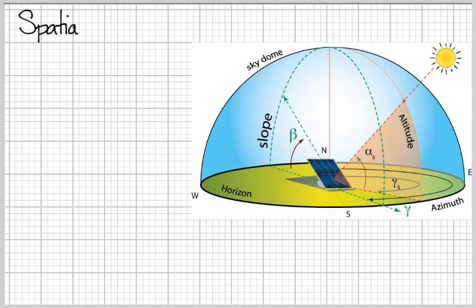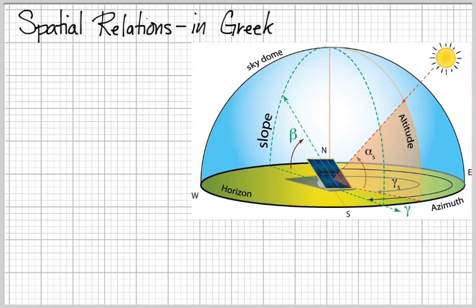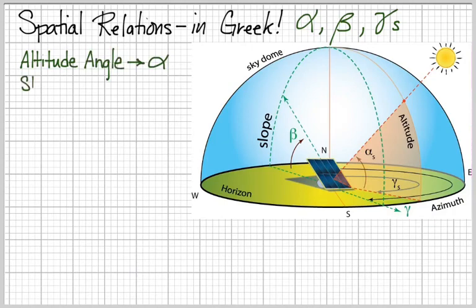What we're going to start with is the basics, which is, what are going to be the core spatial relations? What are our coordinate systems that we're going to use in this class? The spatial relationships are the ABCs, or in Greek the alpha, beta, gammas. So, in solar conventions we use some pretty regular Greek characters to represent different angular relationships.